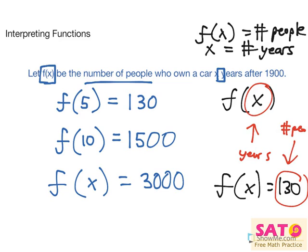Alright. Now, the next two, I'll let you think about it. So I'll pause here for a sec. Alright. So f of 10 equals 1500. That would be 10 years after 1900, which is 1910, equals 1500 people. So in the year 1910, there are 1500 people who own a car.